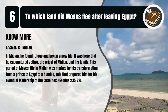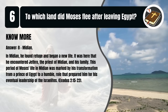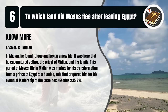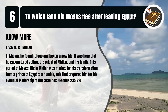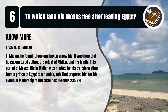That's B. Midian. In Midian, he found refuge and began a new life. It was here that he encountered Jethro, the priest of Midian, and his family. This period of Moses' life in Midian was marked by his transformation from a prince of Egypt to a humble role that prepared him for his eventual leadership of the Israelites. Exodus 2:15-22.